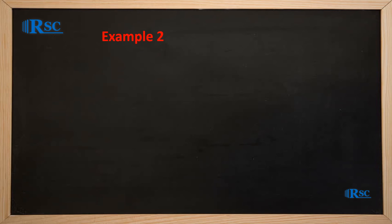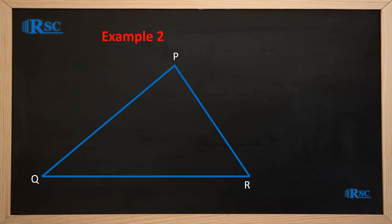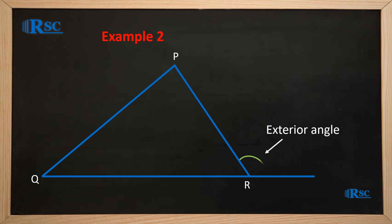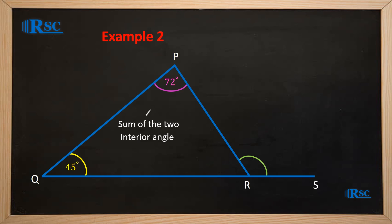In this example, with triangle PQR, we have to calculate the measure of the exterior angle at R. We know that angle PQR is equal to 45 degrees and angle QPR is equal to 72 degrees. The exterior angle at R, which is angle PRS, is equal to the sum of the two interior angles at P and at Q.